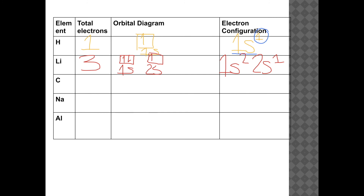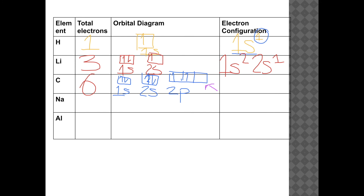Let's try carbon, which has six total electrons. We start in the 1s and place two electrons. Then the 2s with two electrons. We still need more room, so we go to the 2p room, which has three bunk beds. We place one electron in each of the first two bunk beds — there's still an empty one, which is fine. Carbon's electron configuration is 1s2, 2s2, 2p2.